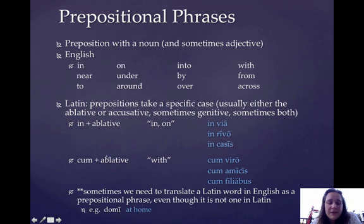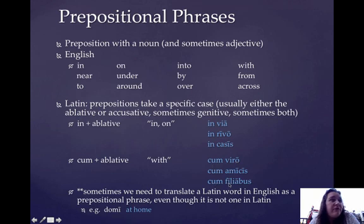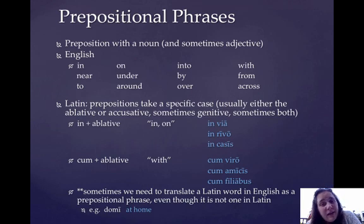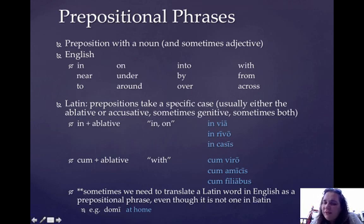Cum also takes the ablative, and it means 'with.' So cum viro means 'with a man,' cum amicis means 'with friends,' and cum filiabus means 'with the daughters.' Let me point out that since filius (son) and filia (daughter) would both have the same dative and ablative plural — filiis — filia takes a different ablative and dative plural. The ablative and dative plural of filia (daughter) is filiabus.